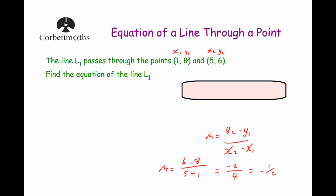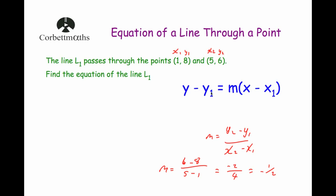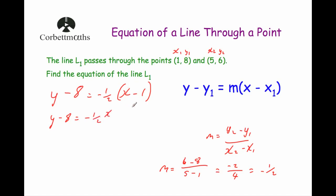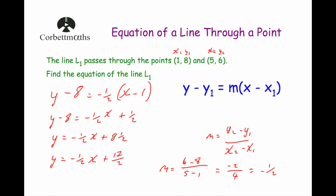Now we've got the gradient, we can substitute this plus one of the coordinates into the equation y minus y1 equals m bracket x minus x1. Using the point labeled x1, y1, that's (1, 8): y minus 8 equals minus one half brackets x minus 1. Expanding: y minus 8 equals minus one half x plus one half, because negative times negative is positive. Adding 8 to both sides gives y equals minus one half x plus 8 and one half, which can also be written as y equals minus one half x plus 17 over 2.